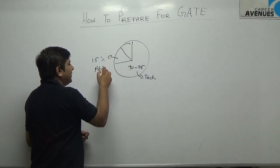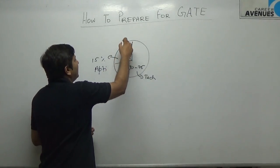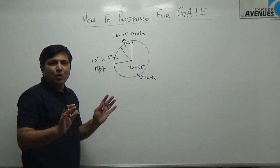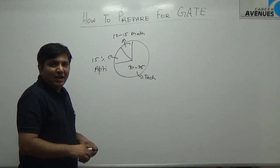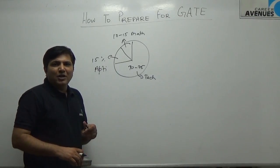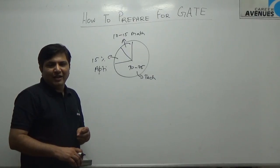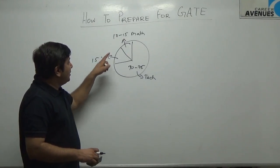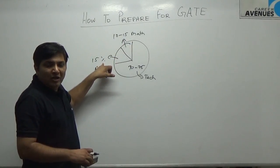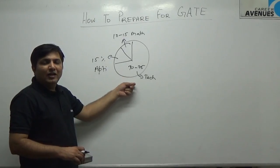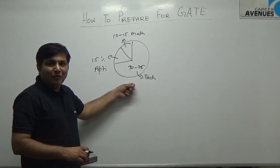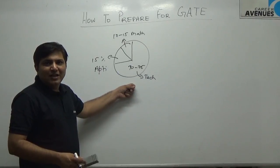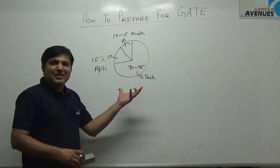About 15 percent is aptitude and 10 to 15 percent is mathematics. That is the broad structure for engineering branches. If you are a physics, chemistry, or life sciences GATE taker, the paper is different — it does not have mathematics. You will have aptitude for 15 marks and the rest is technical. For physics students it is physics; for life sciences students, chemistry is taken as an additional topic.